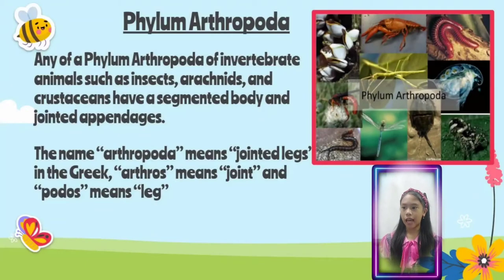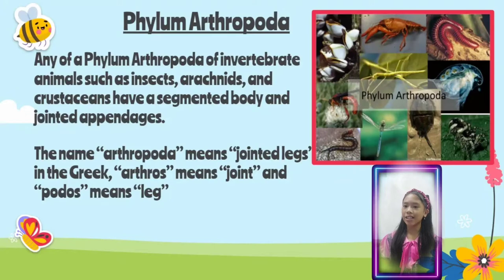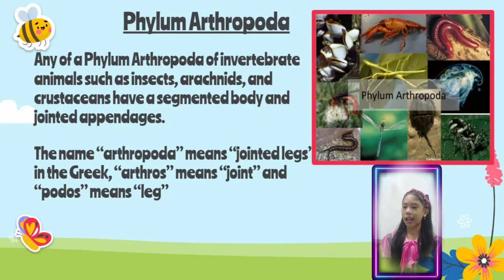Phylum Arthropoda: any of invertebrate animals such as insects, arachnids, and crustaceans that have a segmented body and jointed appendages. The name arthropoda means jointed legs in Greek — arthros means joint and podos means leg.